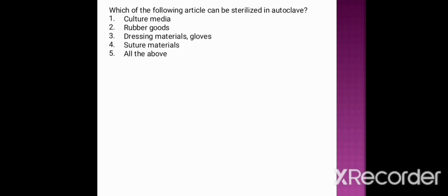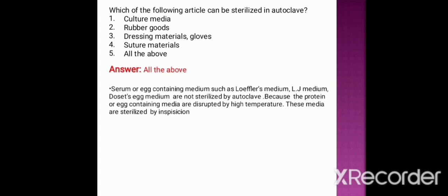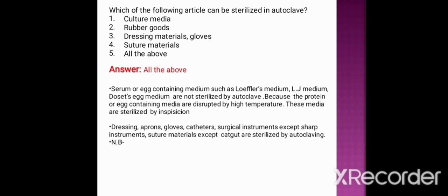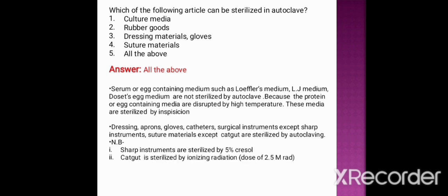Next question: which of the following articles can be sterilized in autoclave? Option one: culture media. Option two: rubber goods. Option three: dressing materials and gloves. Option four: suture materials. Option five: all of the above. The correct option is all of the above. However, note that serum- or egg-containing media such as Loeffler's medium, LJ medium, and Dorset medium are not sterilized by autoclave — they are sterilized by inspissation. Also, catgut sutures are not sterilized in autoclave; they should be sterilized by ionizing radiation. All surgical instruments are sterilized in autoclave except sharp instruments, which are sterilized by 5% crystal violet.